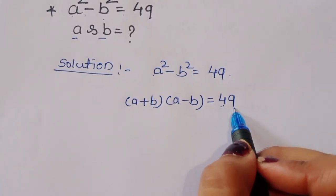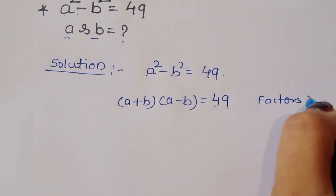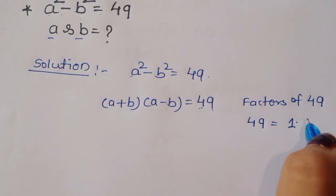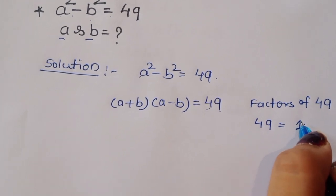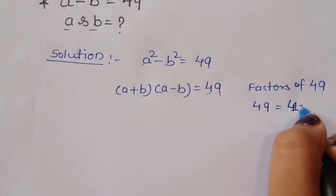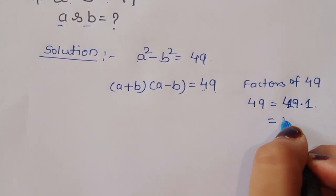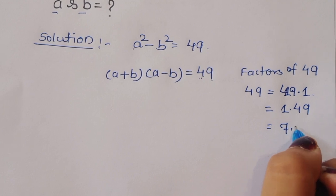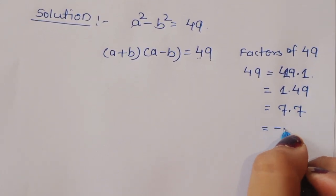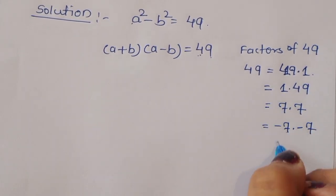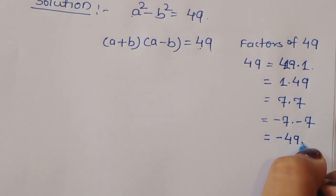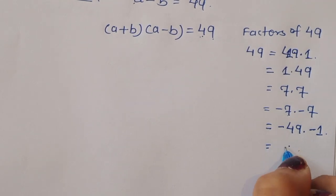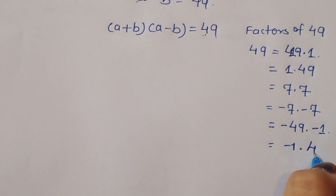First, we find the factor pairs of 49. The factor pairs are: 49 × 1, 1 × 49, 7 × 7, (-7) × (-7), (-49) × (-1), and (-1) × 49.